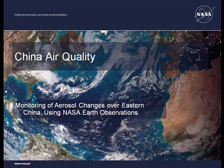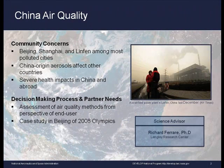Their research focused on monitoring aerosol changes over eastern China using NASA Earth observations. Eastern China is home to roughly a billion people, and agriculture, industry, and energy are major contributors of air pollution for the country. Due to severe health implications for the people of China and nearby countries, the DEVELOP team conducted an assessment of air quality methods that can be utilized by an end user.